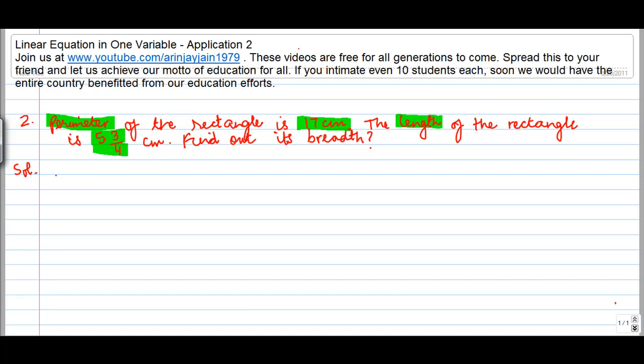Let us take a problem on linear equation in one variable. Now, let us read this question. Perimeter of a rectangle is 17 centimeter. The length of the rectangle is 5 by 3, 4 centimeter. Find out its breadth.